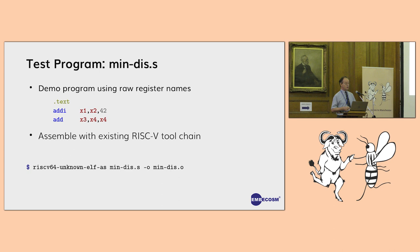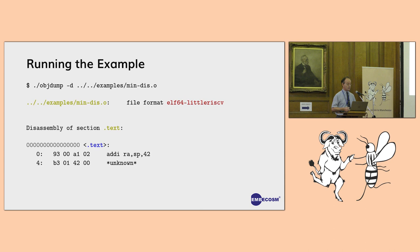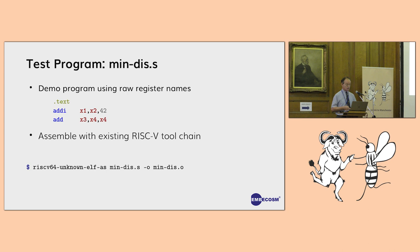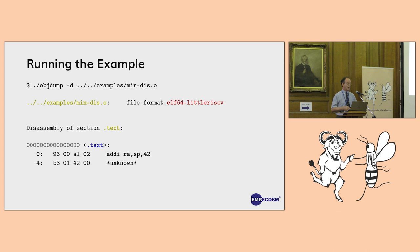Here's a little demo program with one instruction we know about (add immediate) and one we don't (add registers). We cheat by using the existing RISC-V toolchain to create a binary so we can test the disassembler. Using our CGEN-built objdump on the example binary: when disassembling, it recognizes ADDI because we defined it in CGEN, but doesn't recognize the ADD instruction and just says it doesn't know what it is. That's all there is to creating a disassembler - to make a full one, just add the rest of the instructions.